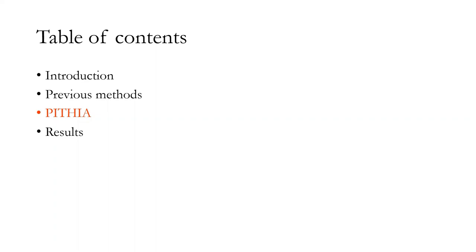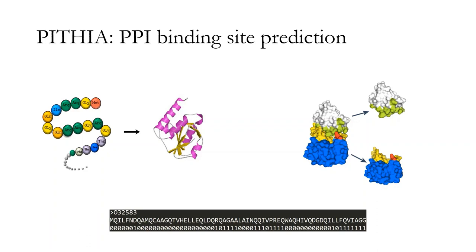Now let's talk about the main architecture of Pythia. Pythia is a protein-to-protein interaction binding site prediction model that solely uses primary structure. As its input, Pythia employs FASTA files, which can be seen in the picture, and which contain only the name and the sequence of the protein. As its output, Pythia predicts a number between 0 and 1. 1 indicates that the amino acid is a binding site, and 0 means that the specific amino acid is not a binding site.